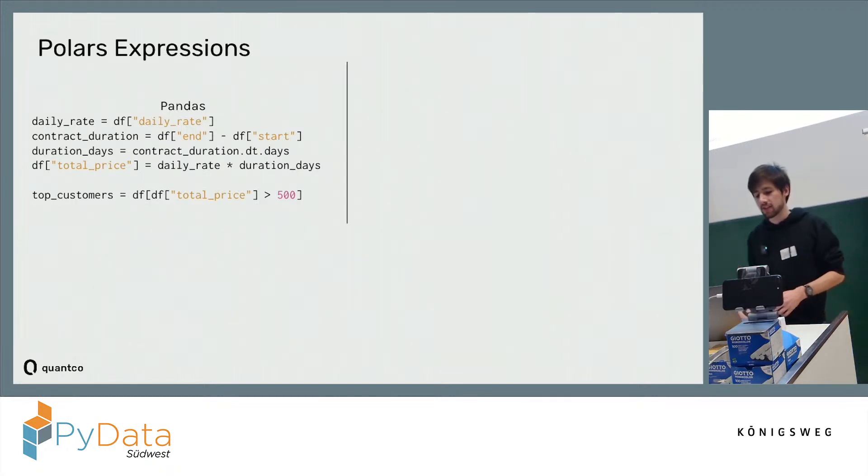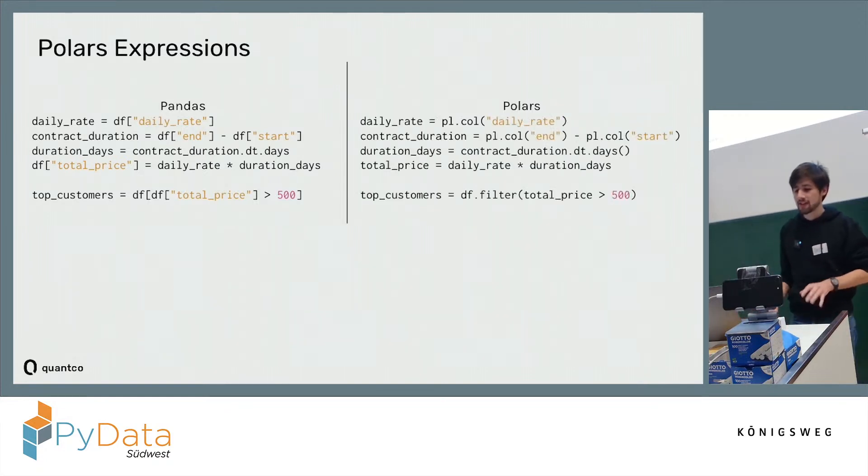We figure out the number of days that their contract ran and then just filter it. The equivalent Polars code would look something like this, with the main difference being that instead of how Pandas computes this, doing the computation step-by-step and computing all the intermediate results.